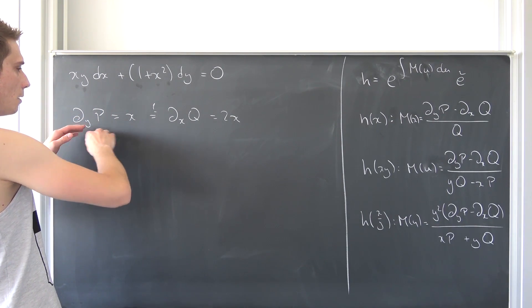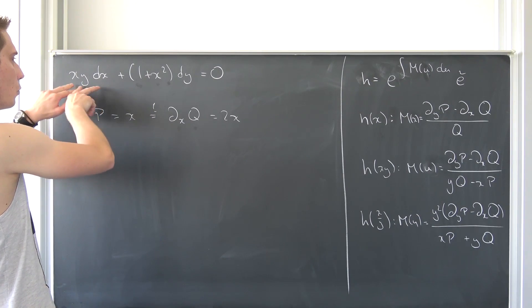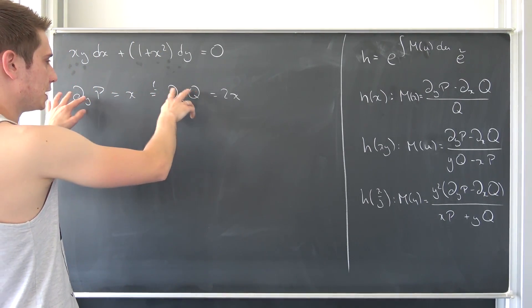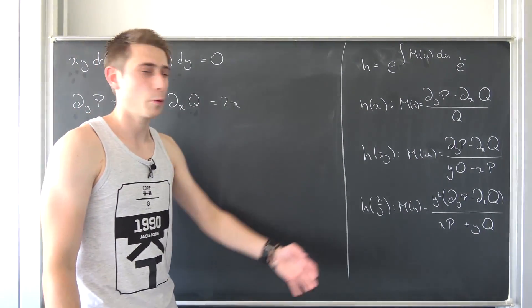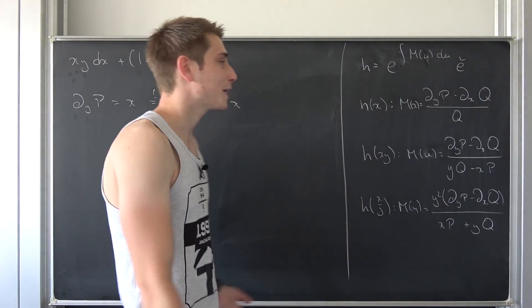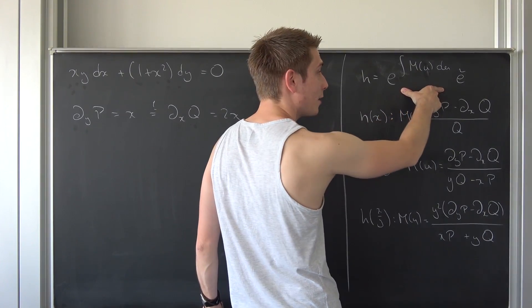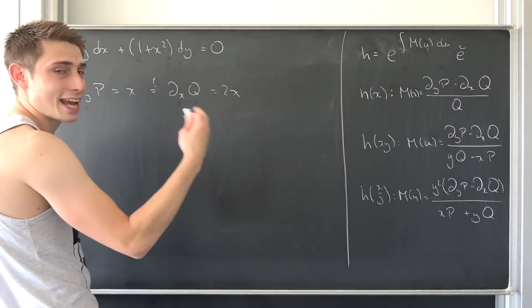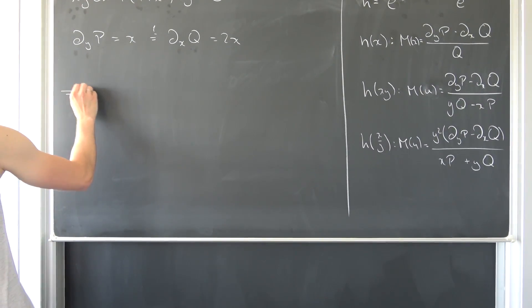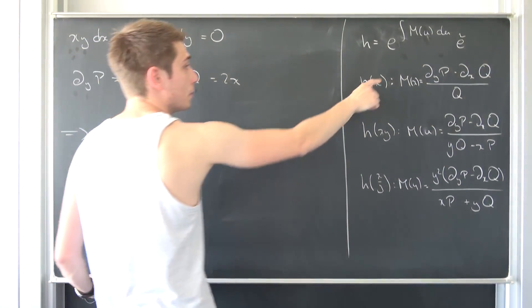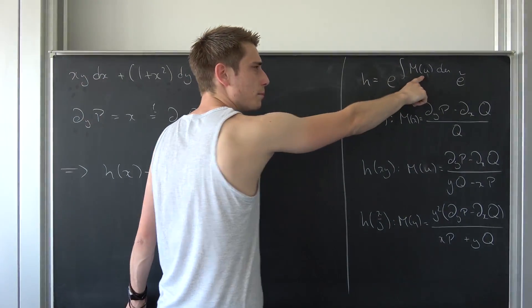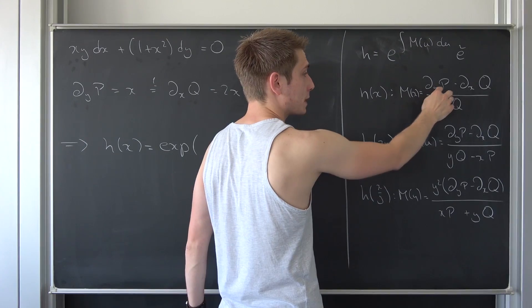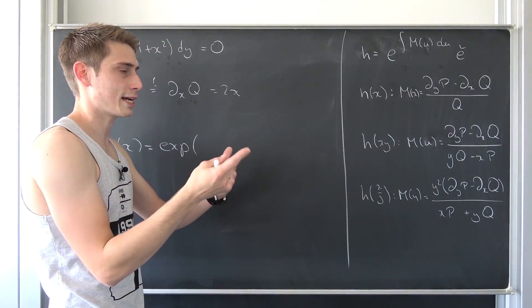We are going to multiply this equation by an h — an integrating factor. We multiply the whole equation by h and then check if those new functions h·P and h·Q are actually going to be equal when we take the derivatives. Now we have found five forms and we can just check. Let's see, if we treat h as a function of x, then our main formula gives us that h(x) is going to be the exponential function of the integral of some m(u) with respect to u. What is m? In this case it is (∂P/∂y − ∂Q/∂x) / Q.